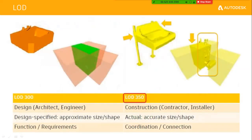For example, a sink at LOD 300 is very helpful for architects and engineers — it shows the approximate size, shape, function, and carries supply water as well as return water connections. But when it moves to the construction phase, it needs detailed connections, accurate size and shape to finalize the building plan, and coordinate connections. These detailed specifications come in at LOD 350, which is where a manufacturer finds their place in the BIM process.